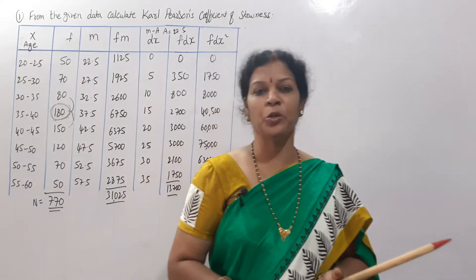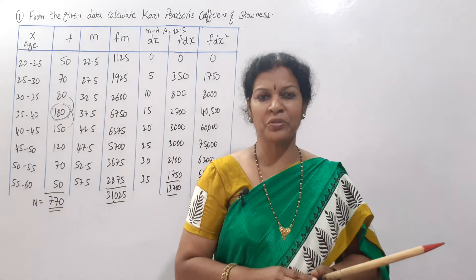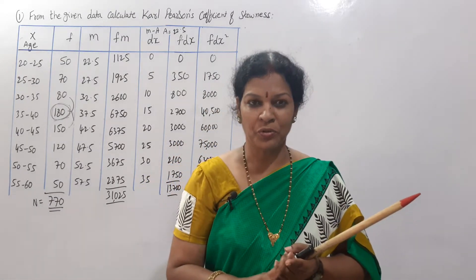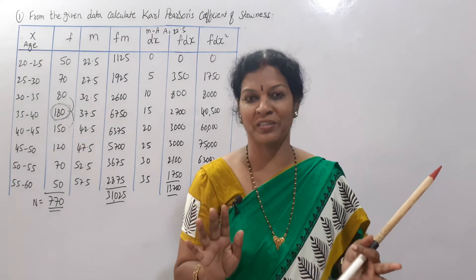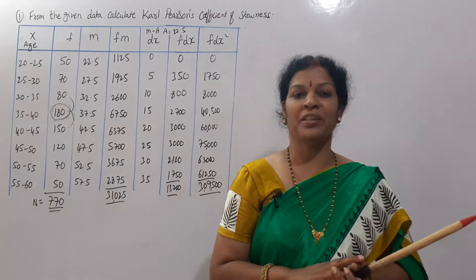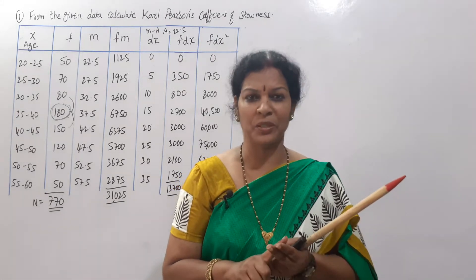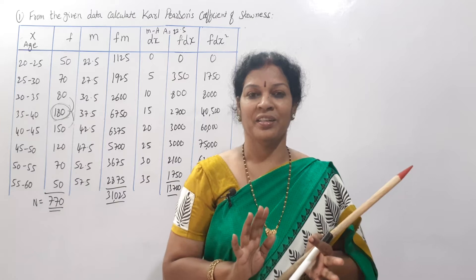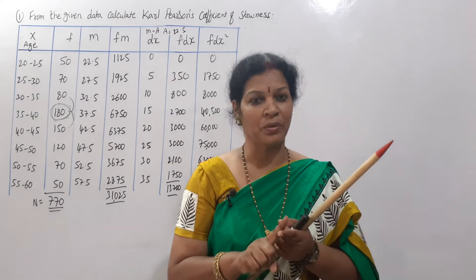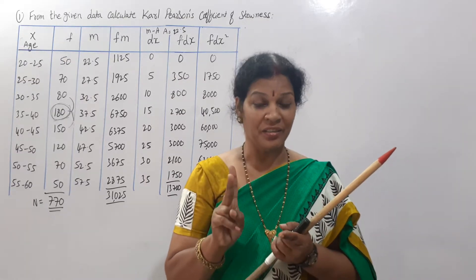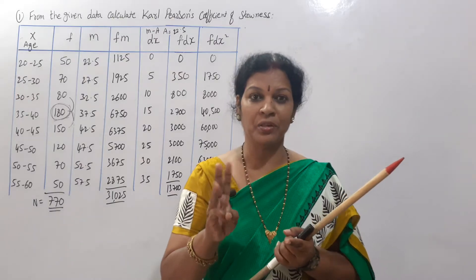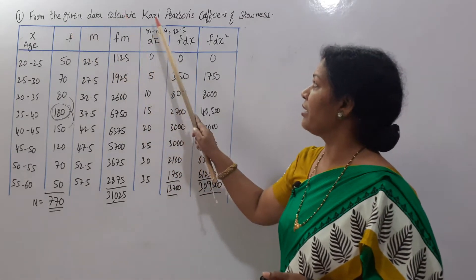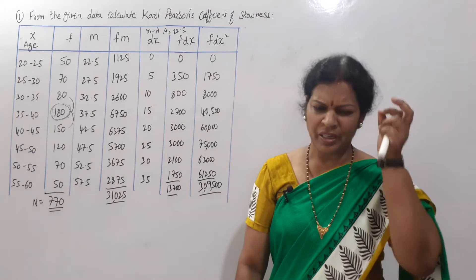Hello dear students, welcome to Accounts in Telugu by Prof. Devika Bhatnagar. Last class we gave you a skewness introduction. Today we will cover Carl Pearson's coefficient of skewness. The formula is SKP = (x̄ - z) / ρ, where x̄ is arithmetic mean, z is mode, and ρ is standard deviation.